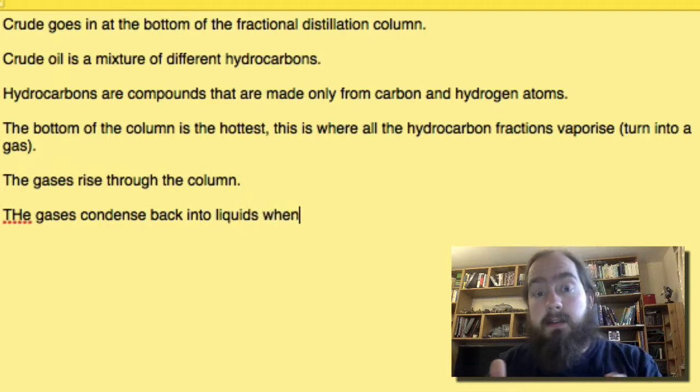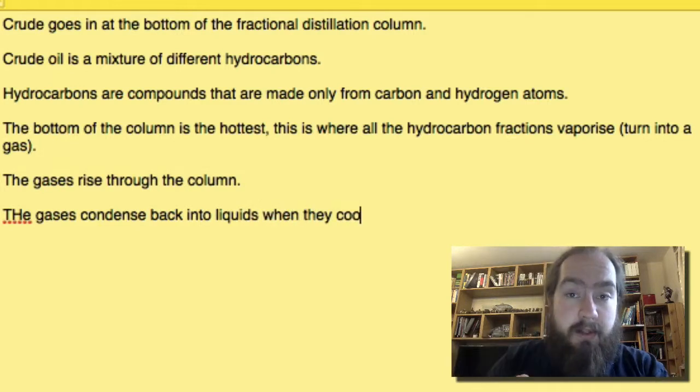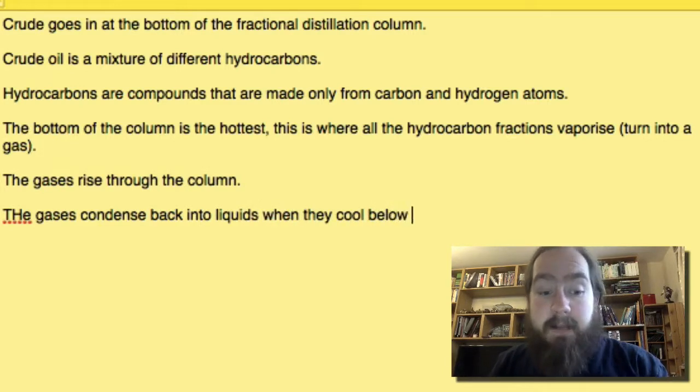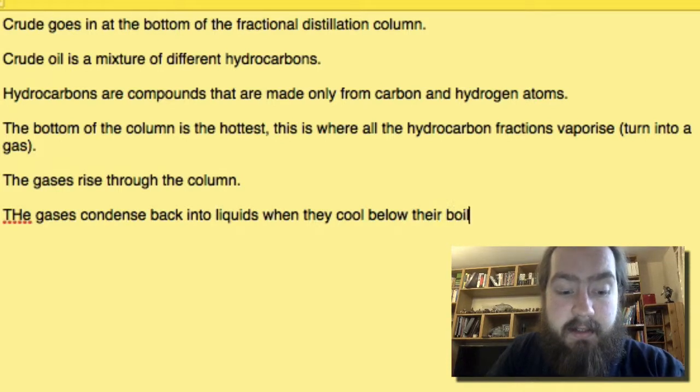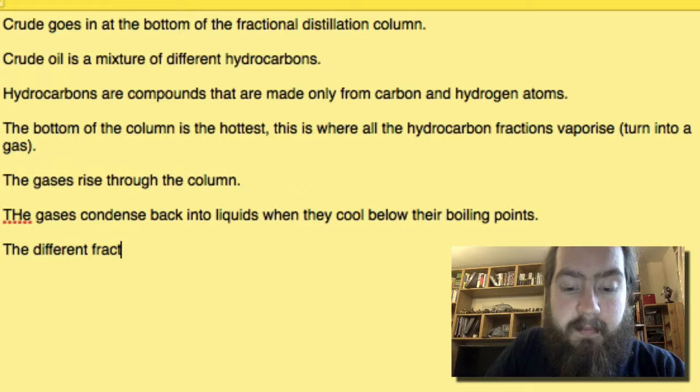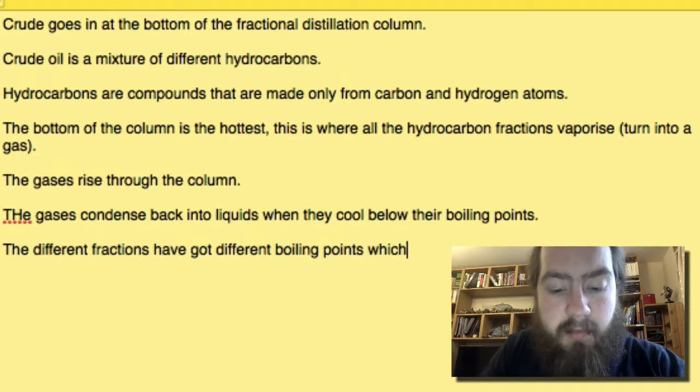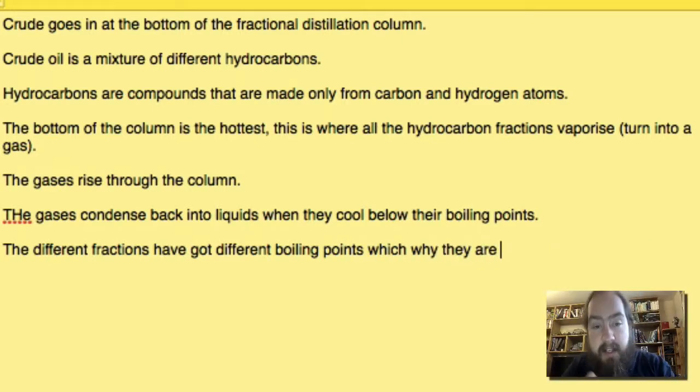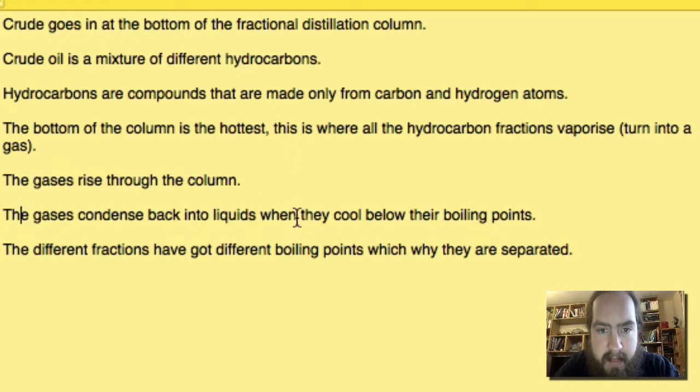Then when the gases get to a part of the column that's actually cooler than their boiling point, they're going to condense back down. So the gases condense back into liquids when they cool below their boiling points. And then the reason they're separated is because the different fractions have got different boiling points.